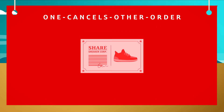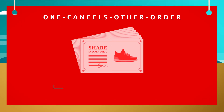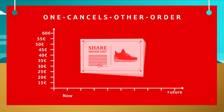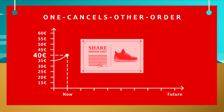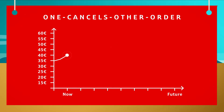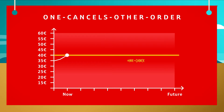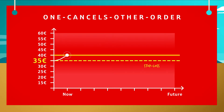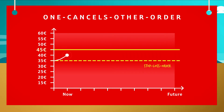An example: you own 60 shares of the Sneaker Corporation company. A share currently has a value of 40 euros. The share is expected to fall in the short term, but will rise over the long term. You would like to limit losses downwards, but benefit from price gains upwards at the same time. So you need to set a one cancels other order with two orders: a stop loss order at 35 euros and a limit order at 45 euros.